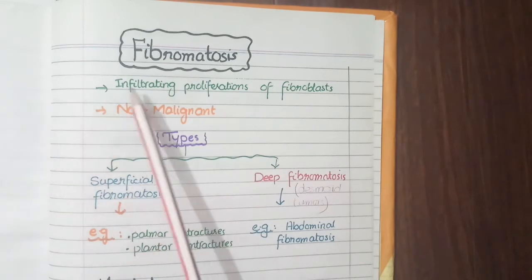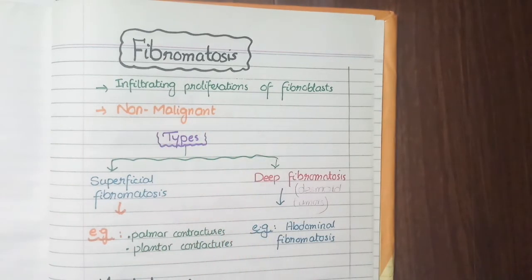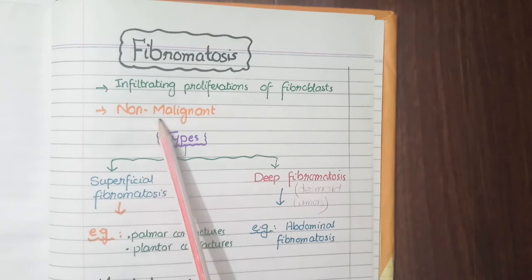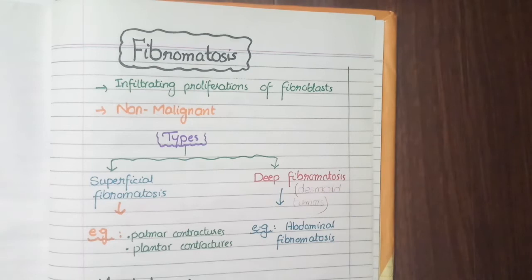Fibromatosis are infiltrating proliferations of fibroblasts that are non-malignant. Infiltrating means these masses invade the surrounding tissues locally, but non-malignant means they do not metastasize to other organs. These infiltrating proliferations of fibroblasts are called fibromatosis.